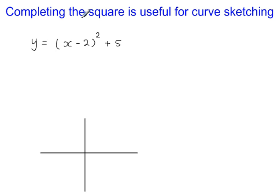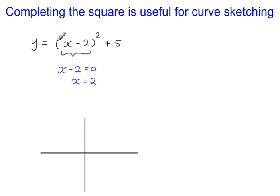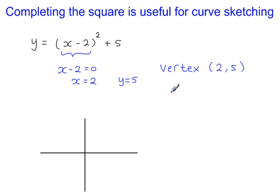For y equals x minus 2 squared plus 5, the vertex coordinates are found as follows. Focus on the brackets: set x minus 2 equal to 0, so x equals 2. This is the x-coordinate for the vertex. When x is equal to 2, the squared bracket is 0, leaving y equal to 5. So the vertex has coordinates 2, 5.